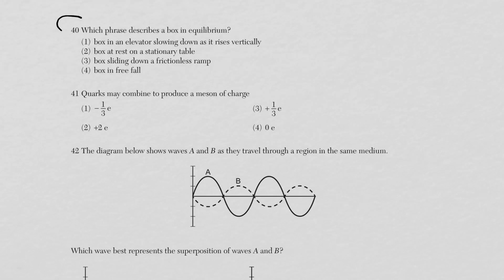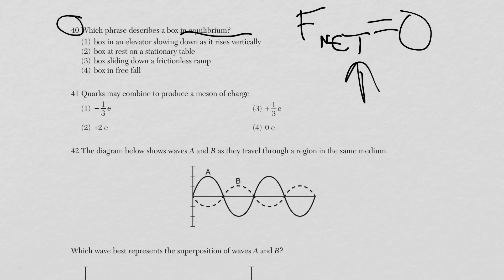Question 40: which phrase describes a box in equilibrium? Equilibrium means F_net = 0 — object at rest or constant speed. A slowing elevator is not in equilibrium; a box sliding down has F_net; a box in free fall has accelerated motion. A box at rest on a stationary table — choice two — is in equilibrium.